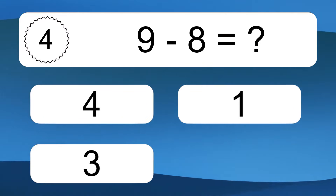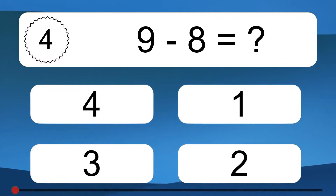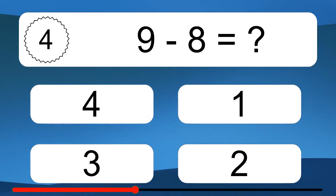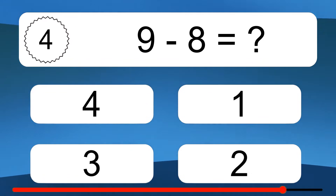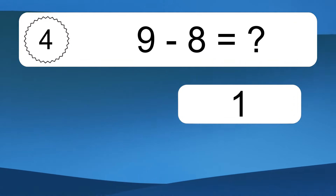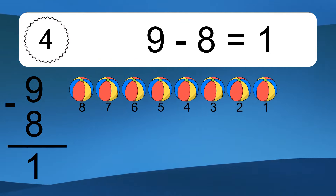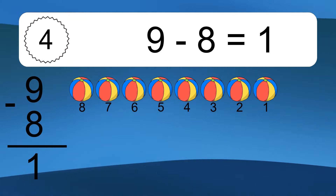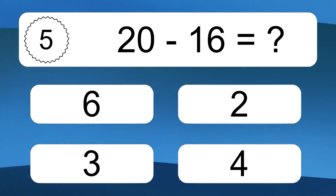9 minus 8 equals what? 9 minus 8 equals 1. Let's count it: 8, 7, 6, 5, 4, 3, 2, 1. 20 minus 16 equals what?